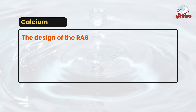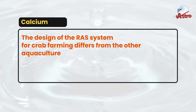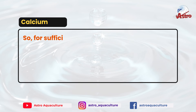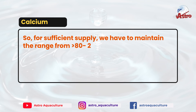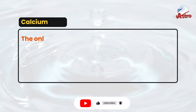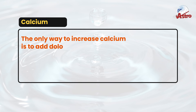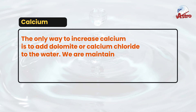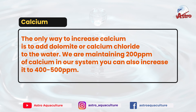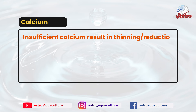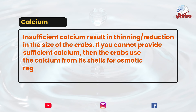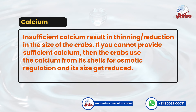Regarding calcium: the design of the RAS system for crab farming differs from other aquaculture systems because crabs consume calcium from the water. So for a sufficient supply, we have to maintain the range from 80 to 200 ppm of calcium, and the level can even raise up to 400 to 500 ppm. The only way to increase calcium is to add dolomite or calcium chloride to the water. We are maintaining 200 ppm of calcium in our system. Insufficient calcium results in thinning and reduction in the size of the crabs, as they use calcium from their shells for osmotic regulation.